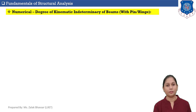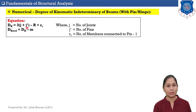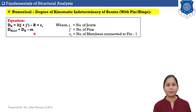Now let's solve a numerical to calculate degree of kinematic indeterminacy of a beam with pin or hinge. The equation is: DK equals 3 times (J plus J') minus R plus RR, where J is number of joints, J' is number of pins, R is number of reactions, and RR is the number of members connected to each pin minus 1, summed over all pins. DK_NAD equals DK minus M, where M is number of members.